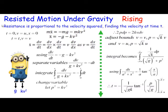You can see here not much difference really, the only thing is the kv squared. It's going to be mx double dot equals minus mg minus m kv squared. Dividing through by m you get x double dot equals minus g minus kv squared.